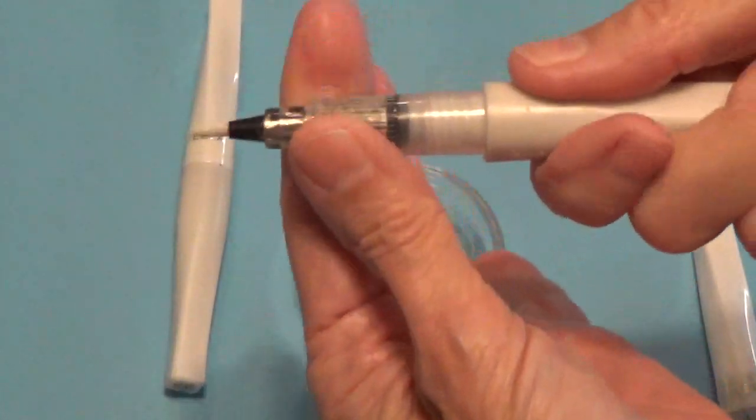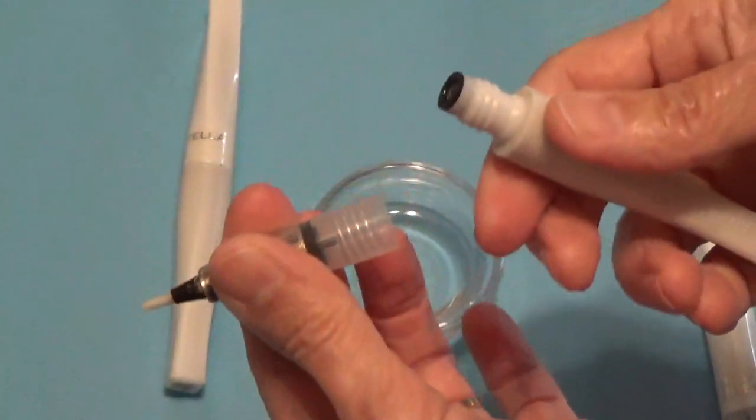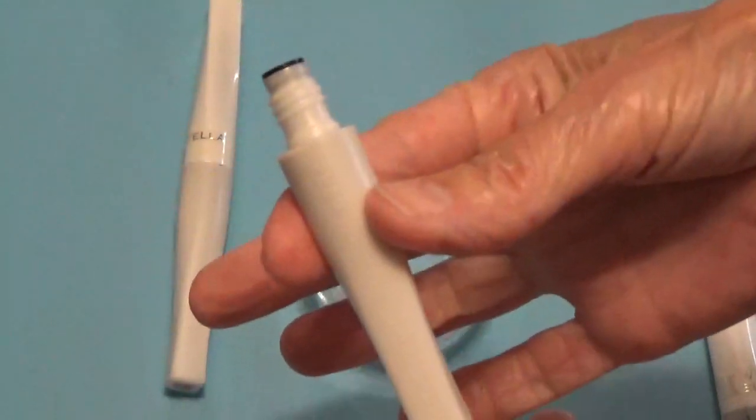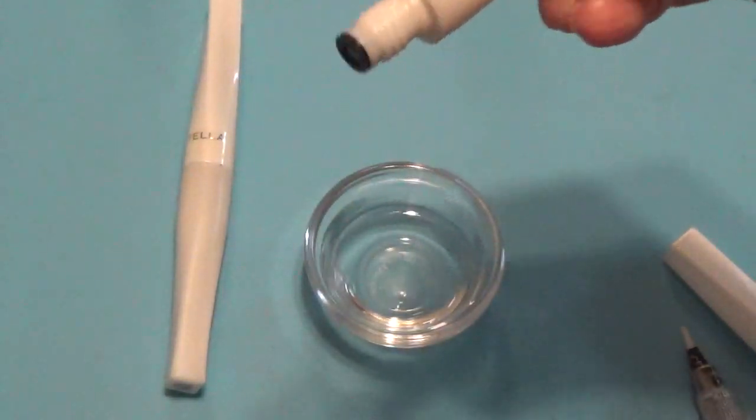So what you do is you just take them apart like this, and on this end, you'll see there's a little hole. Well, this is the end that you squeeze to get everything into the tip.